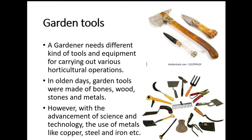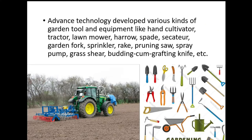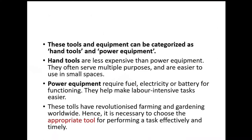The plant we require also varies based on taste, structure, and function. Each plant requires different types of tools to handle. Garden tools are very important. Right from bigger to smaller — hand cultivator, tractor, lawn mower, harrow, secateur, garden fork, sprinkler, rake, saw, spray pump, grass shear, budding cup, grafting knife — everything. Some require electricity, some may not. Tools and equipment can be categorized into two groups: hand tools and power equipment.